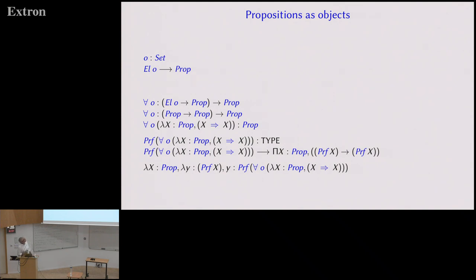Here is a little exercise. If you apply for-all to omicron — recall that for-all takes an X and then a function from element of X to prop and returns a prop — when you apply it to omicron you get element-of-omicron arrow prop arrow prop. But element-of-omicron is the same as prop, so this term also has type prop arrow prop arrow prop. You can apply it to a function mapping propositions to propositions, abstract over X, and you express the proposition 'for all X, X arrow X'.